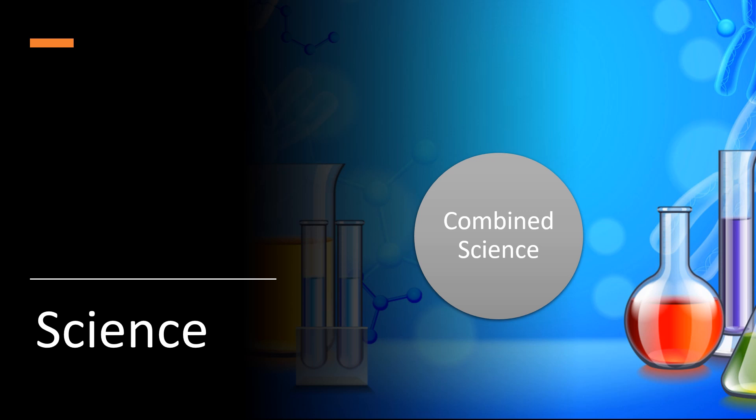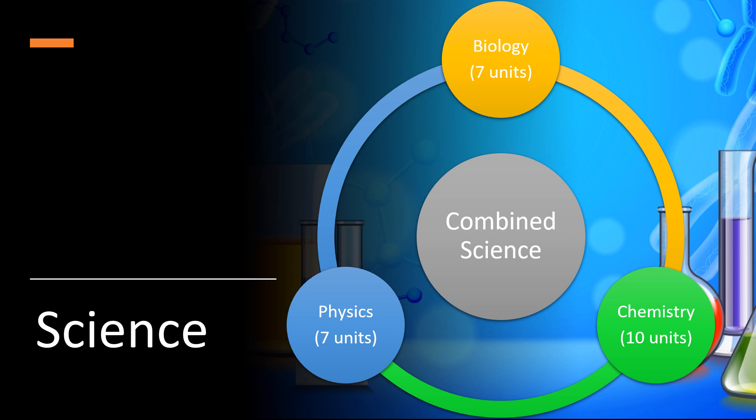So Combined Science is the main pathway that all learners take. That's comprised of biology units, chemistry and physics. So there are seven biology units, 10 chemistry and seven physics units.